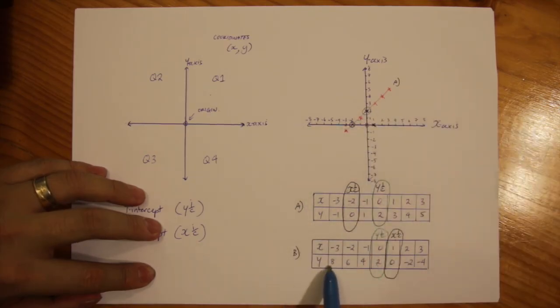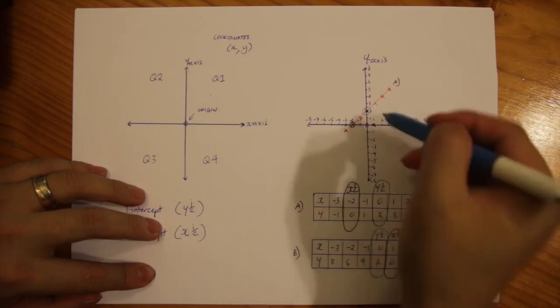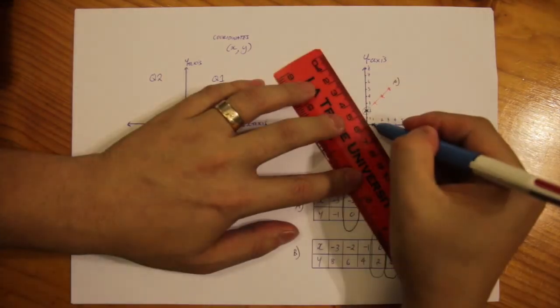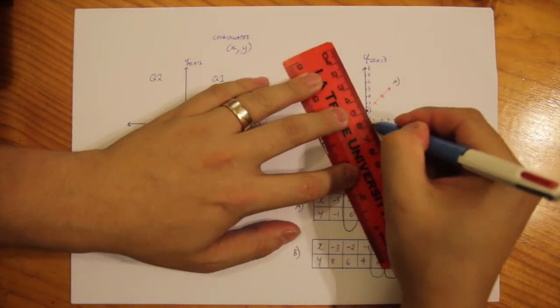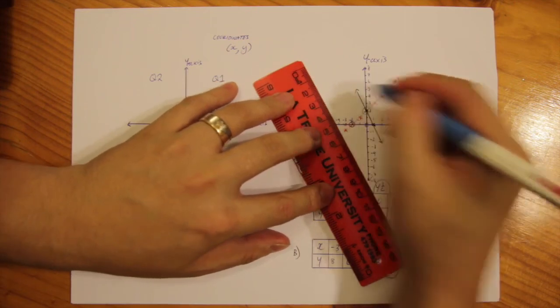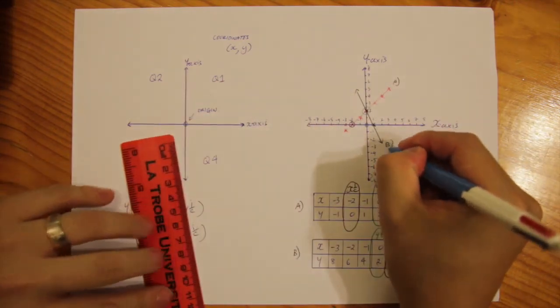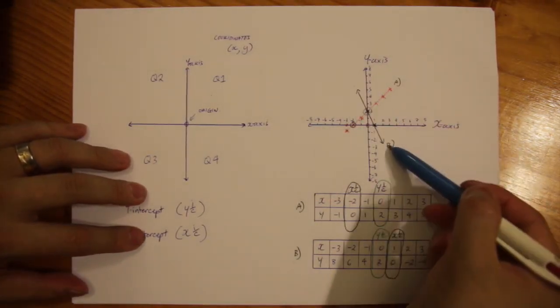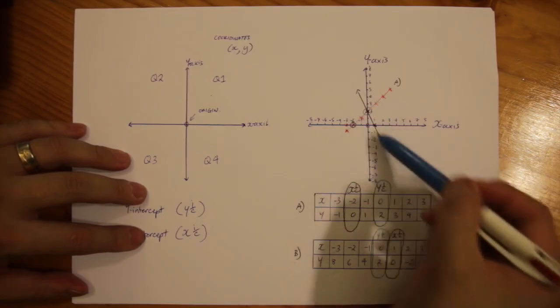Notice that the values of y are decreasing and I've marked two points two intercepts I can confidently join those two dots together. That's going to be my line for table B. It is going down. It's got a negative gradient or a negative slope.